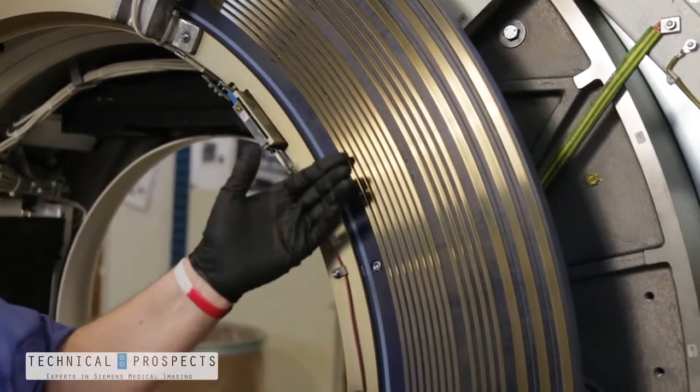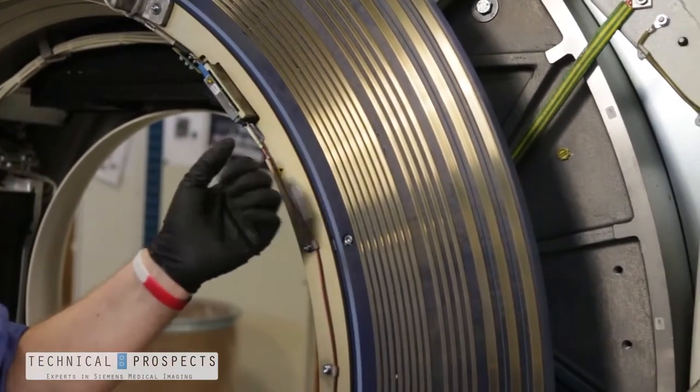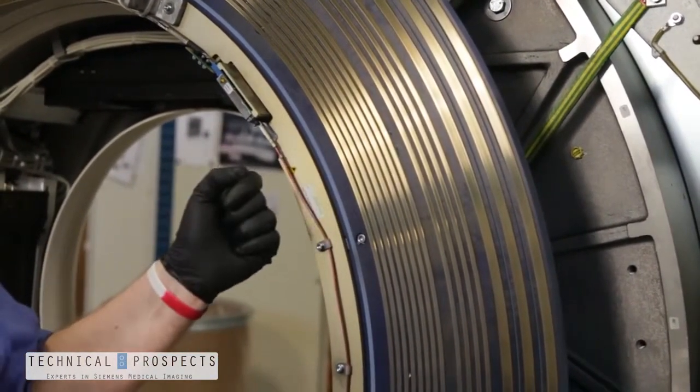The OEM recommends that we inspect the slip ring twice a year, a minimum of every six months during our PM cycle.